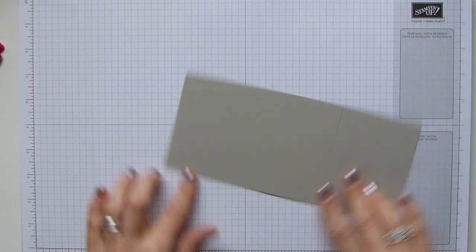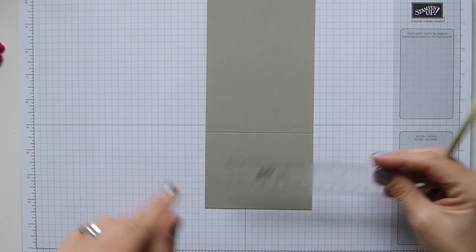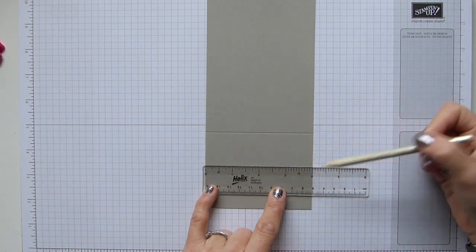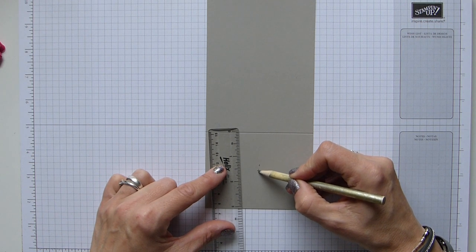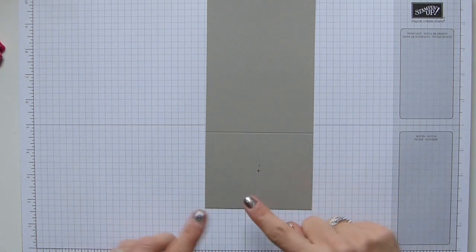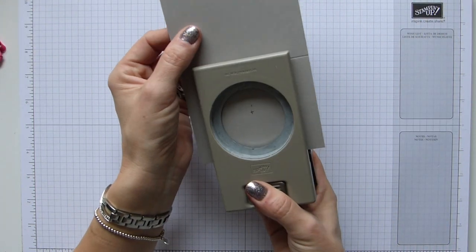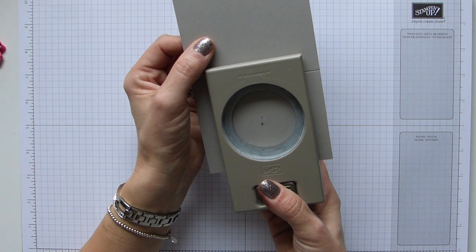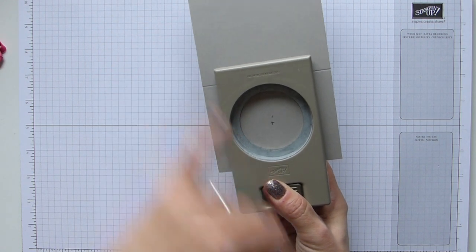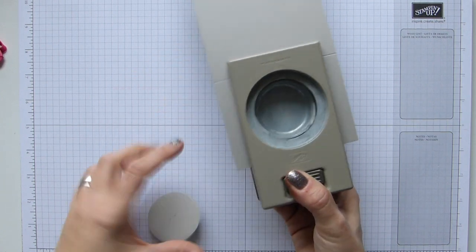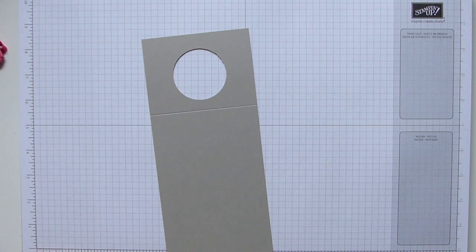Once we've done that, you then need to punch your circle. You can eyeball it if you want to, or you can mark it. This is four inches, so I will mark it at the two-inch point, and then this is three, so I need the one-and-a-half-inch point. So I know that that is roughly where the center of my punch needs to be. I'm using the two-inch circle punch.